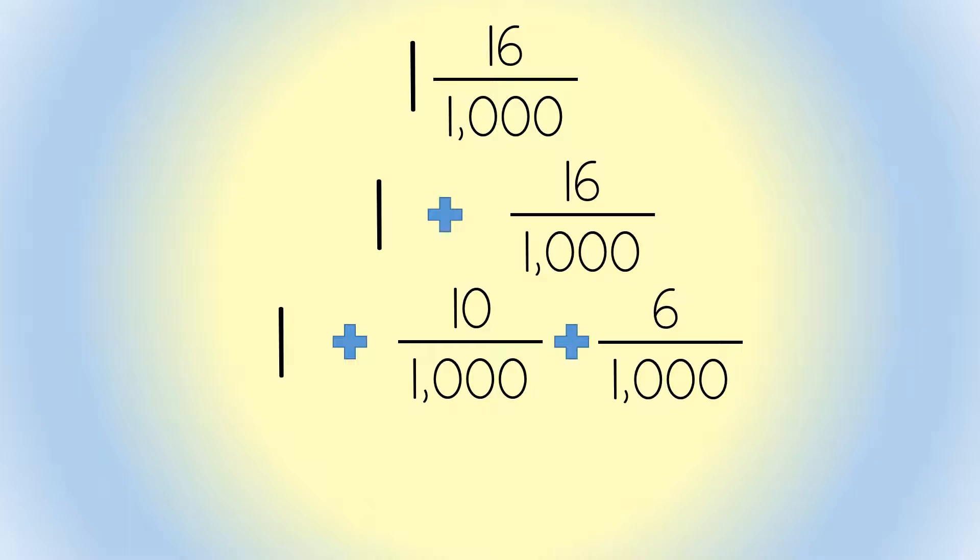Now, focus in on 10 thousandths. How could you reduce that fraction in order for it to have a denominator of 100? 1 again, plus 1 hundredth, plus 6 thousandths.